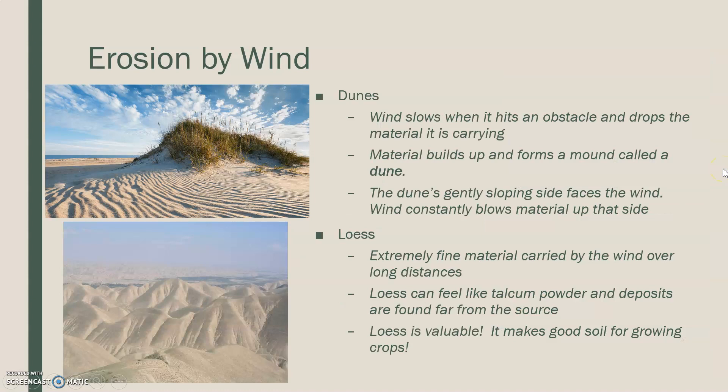Dunes are also created by erosion by wind because wind slows down when it hits an obstacle. Basically, when it hits that obstacle, whatever it hits causes the material or the sediment to be dropped. So anytime a dune is created, you have this object in the middle of the way. The buildup is called a mound, and that mound is called a dune. All the sand that hits it as it's windy drops, creating the dune to get larger in size.